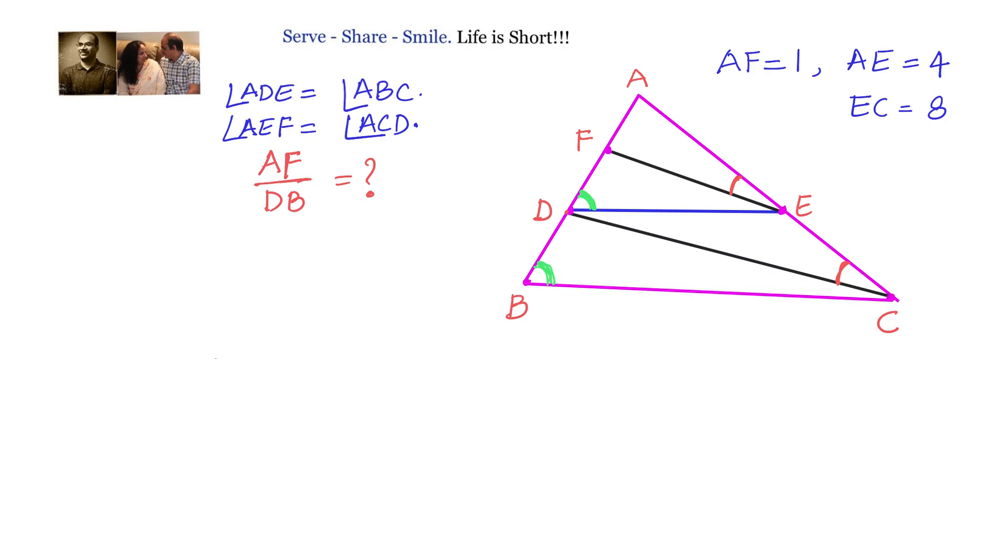We will write down first that angle ADE equals angle ABC. These angles are corresponding angles. If they are corresponding angles then automatically DE is parallel to BC. If DE is parallel to BC then I can write AD by DB equals AE by EC, and this is coming from basic proportionality theorem. This is our equation number 1.